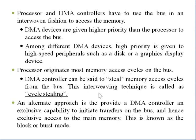The processor and the DMA controller have to use the bus in an interwoven fashion to access memory. Whenever data is being transferred, both the processor and the DMA controller access the bus. DMA devices are generally given higher priority compared to the processor when accessing the bus. Among different DMA devices competing for the bus, higher priority is given to high-speed peripherals such as disk or graphic display devices.